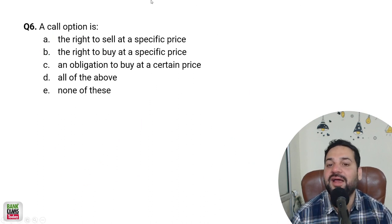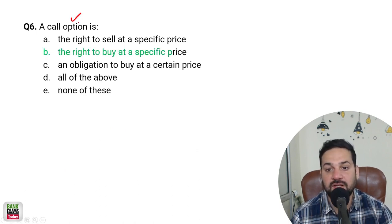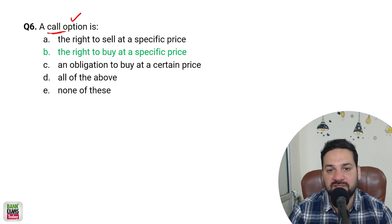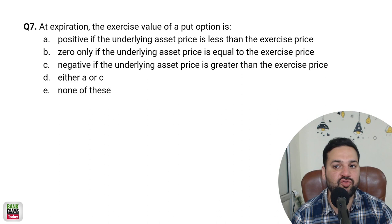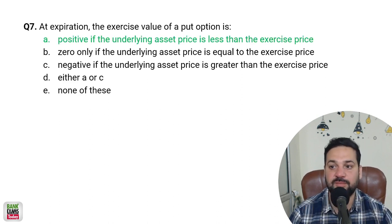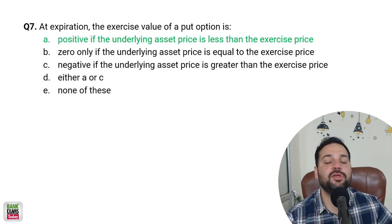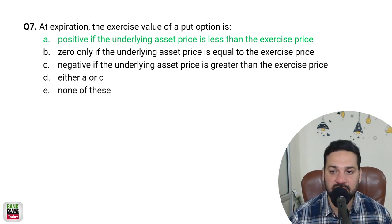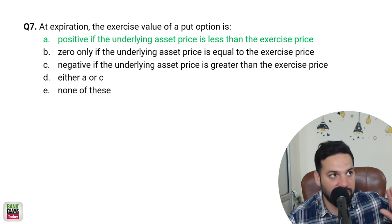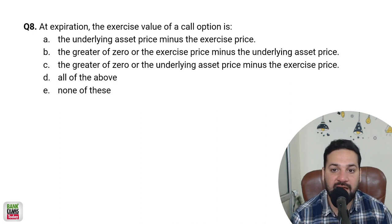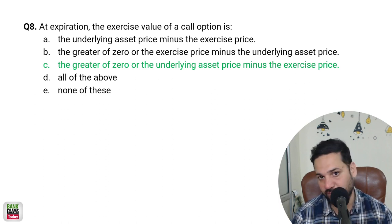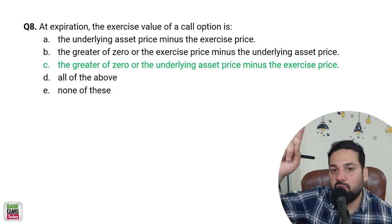A call option, as the name suggests, is a right — not an obligation — to buy at a specific price. A put option is the right to sell at a specific price. At expiration, the exercise value of a put option is positive if the asset price is less than the exercise price. If you have a put option and prices go down, you make money as a bear. If you have a call option with a long position and prices go up, you make money. The exercise value of a call option is the greater of zero or the underlying asset price minus the exercise price.